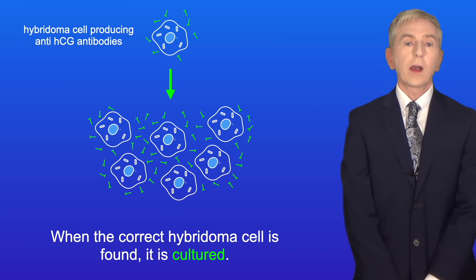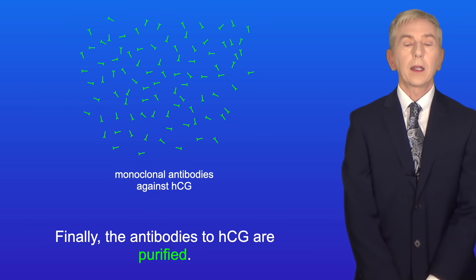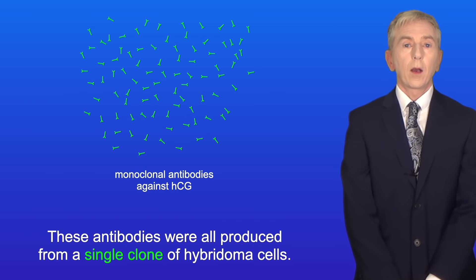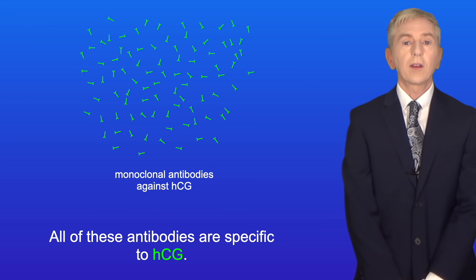When the correct hybridoma cell is found, it's cultured. This produces millions of copies or clones of the original hybridoma. Finally, the antibodies to HCG are purified. Now these antibodies were all produced from a single clone of hybridoma cells, so these are called monoclonal antibodies and all of these antibodies are specific to HCG.